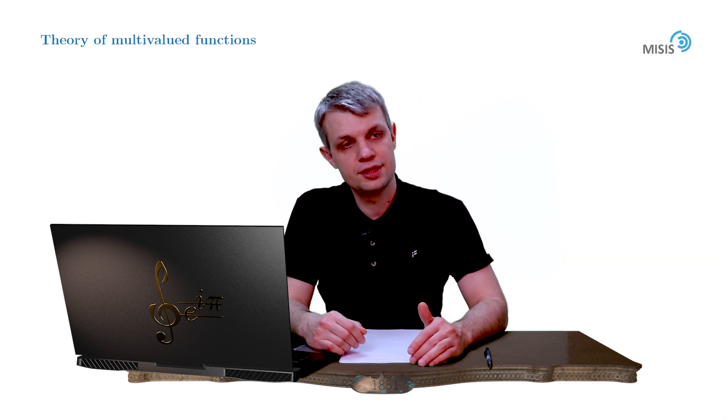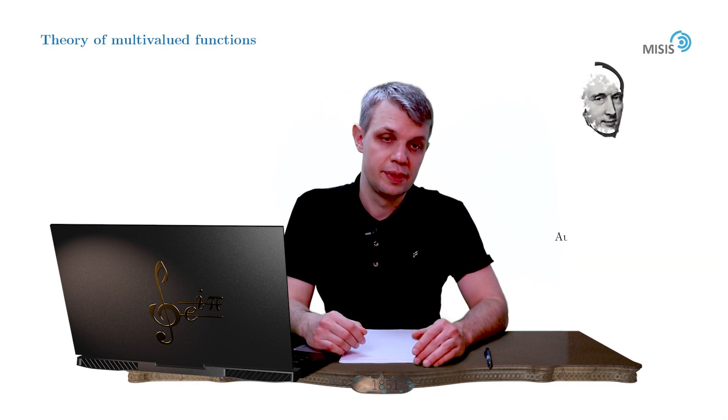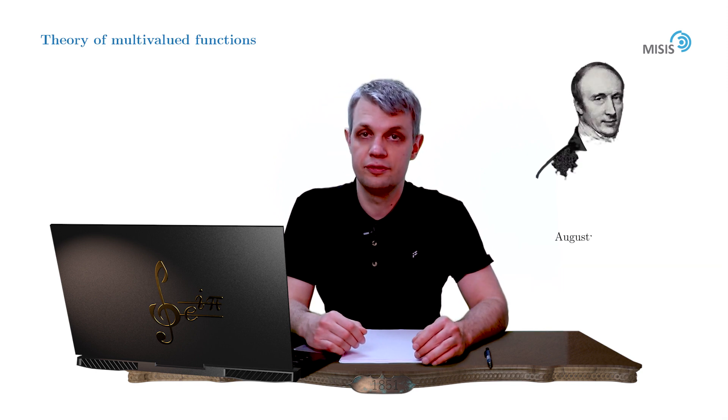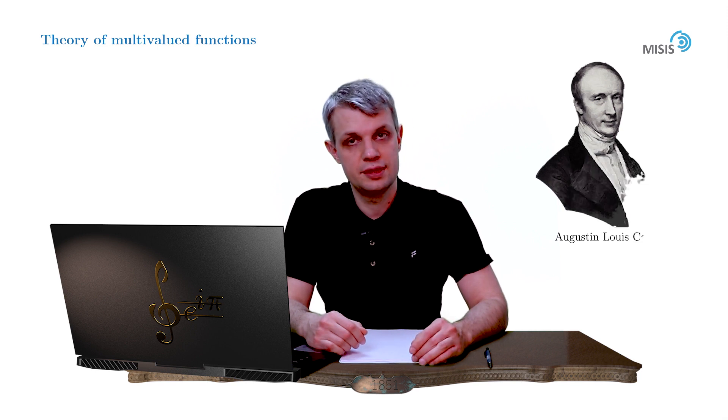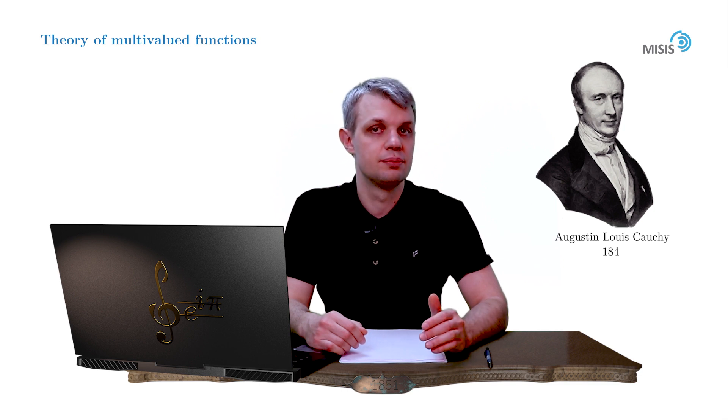For the first time, the theory of multivalued functions was addressed by French mathematician Augustin-Louis Cauchy in his memoir on calculus of complex numbers, published in 1846, where he introduced such concepts as branching and branch cuts.